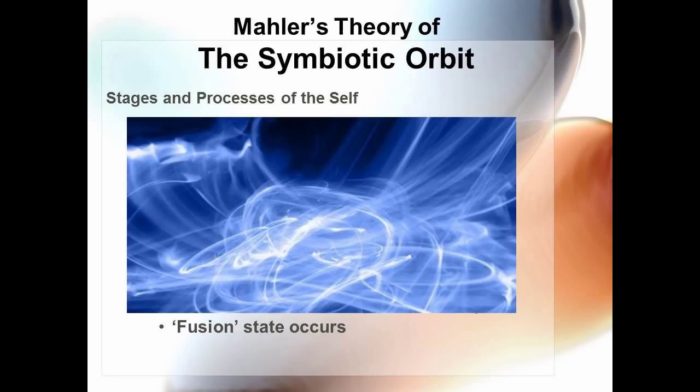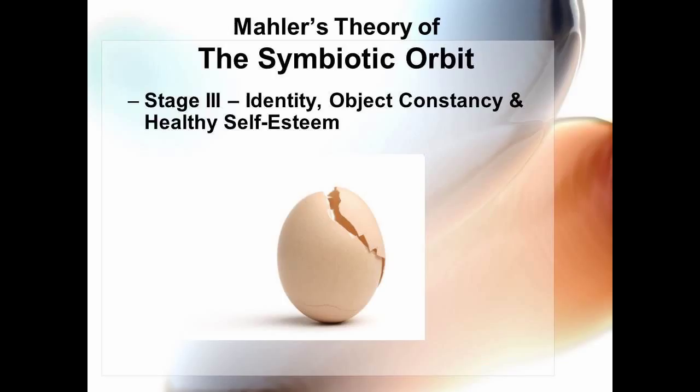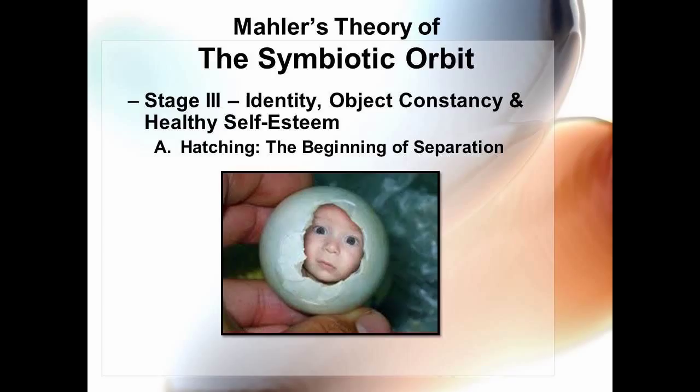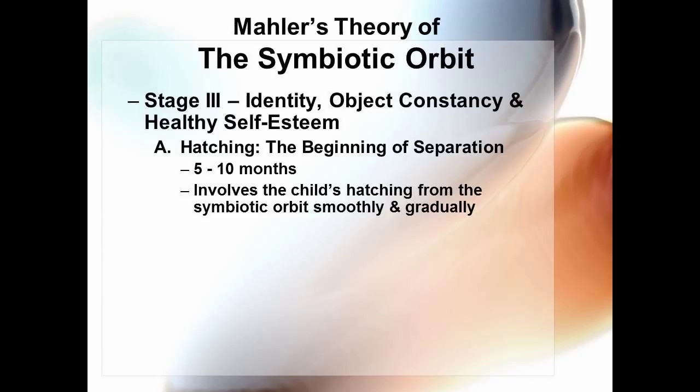Most of the intellectual and emotional development of the child occurs in stage three, which focuses on identity, object constancy, and healthy self-esteem. The first part of this stage is called hatching, which is the beginning of separation from the mother. This occurs between five and ten months and involves the child's hatching from the symbiotic orbit, smoothly and gradually.